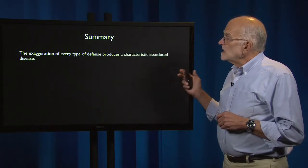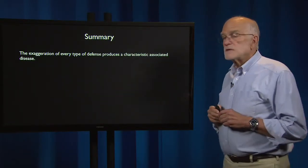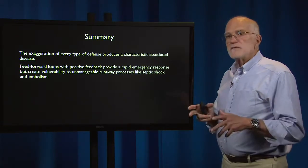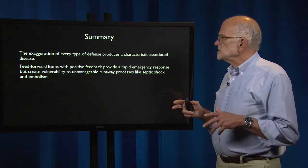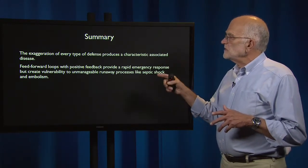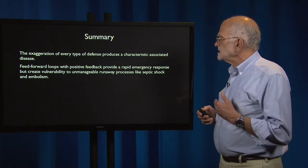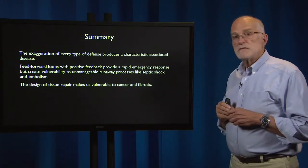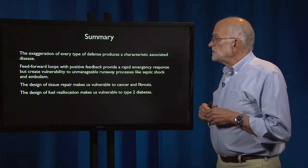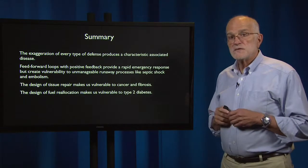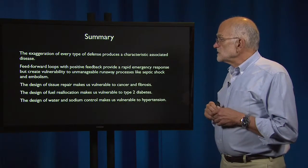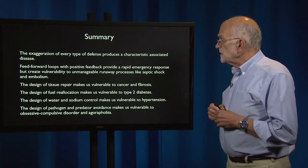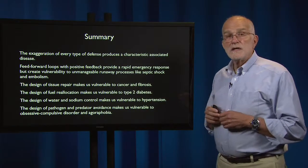To summarize: the exaggeration of every type of defense produces a characteristic associated disease. Feed-forward loops and positive feedback are part of the design of these systems because they provide a rapid emergency response, but those very things create vulnerability to unmanageable runaway processes like septic shock and embolism. The design of tissue repair makes us vulnerable to cancer and fibrosis; fuel reallocation to type 2 diabetes; water and sodium control to hypertension; and pathogen and predator avoidance to obsessive compulsive disorder and agoraphobia.